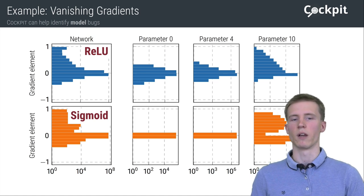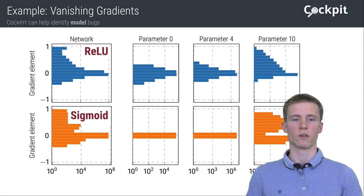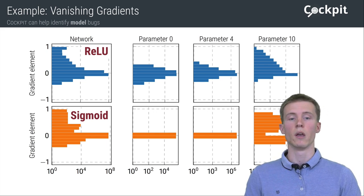And we could not see the vanishing gradients in the global histogram. And that's because many networks such as those have most of their parameters close to the output. And their gradients are well behaved and dominate the full histogram. And we really need a more fine-grained view here to figure out why one of the networks doesn't train.